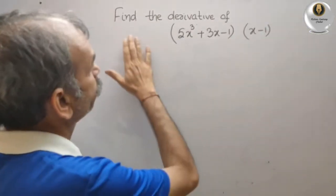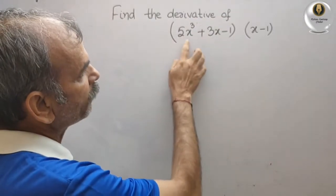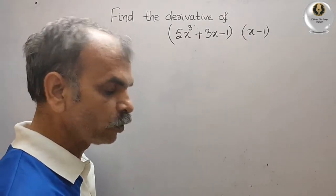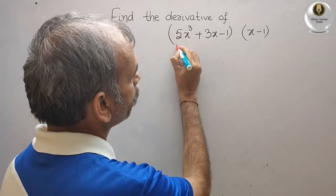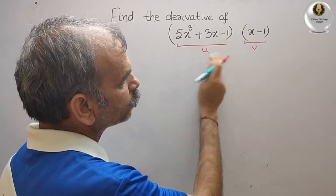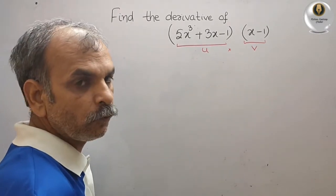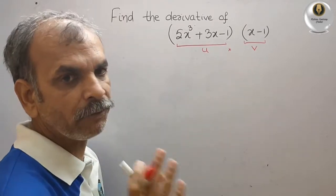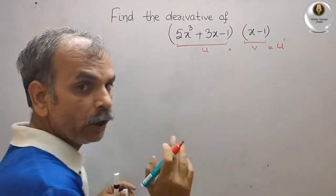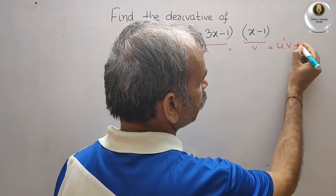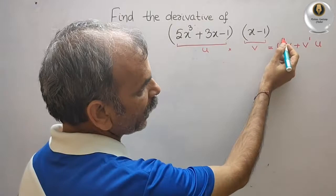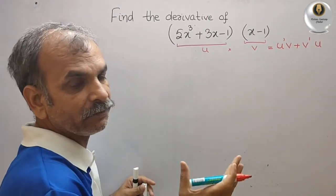The question is: find the derivative of (5x³ + 3x - 1)(x - 1). We will take the first expression as u and the second as v, so it becomes u into v. The derivative of u into v is: derivative of u into v plus derivative of v into u.